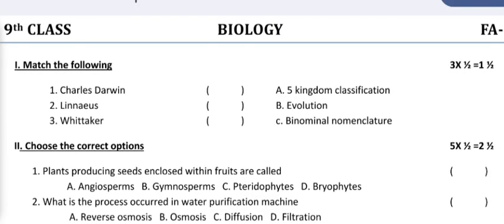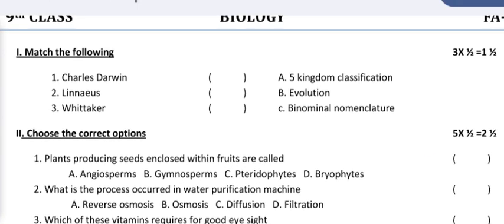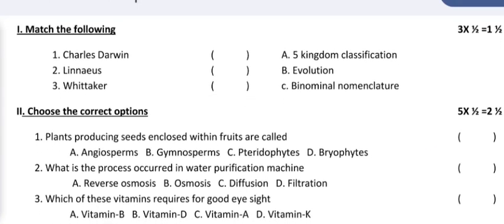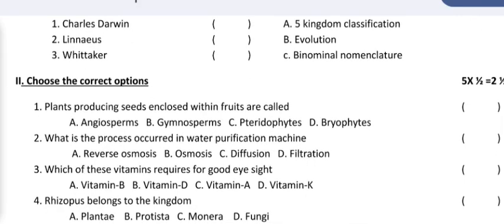Hello, welcome to my YouTube channel. Today's video is 9th class FA2 biology question paper. The first question is match the following. Here 1, 2, 3 and this side A, B, C are given. You have to match them.